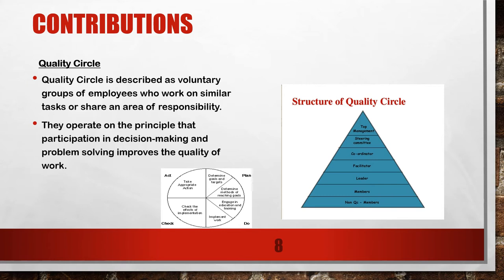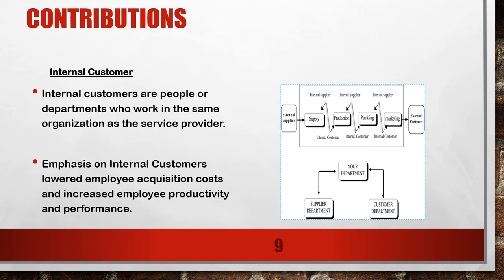It is amazing to note that Ishikawa drew an exponent on the double-addressed Deming plan-do-check-act mode, as seen in this slide. Internal customers are people or departments who work in the same organization as a service provider. Ishikawa suggested that over-reliance on specialists would limit the scope of improvement. Emphasis on internal customers lowered employee acquisition costs and increased employee productivity and performance.